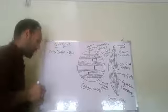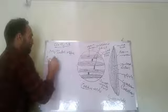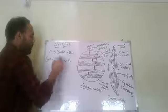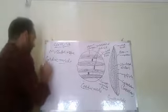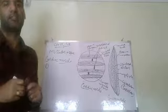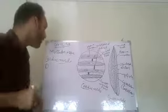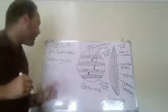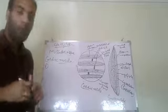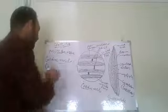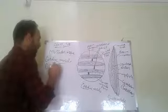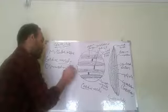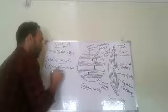Another important muscle is cardiac muscle. The first point is that cardiac muscle shows the characteristics — that is, the properties — of both striated muscle as well as smooth muscle, or we can say unstriated muscle.